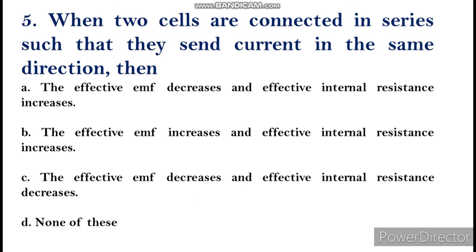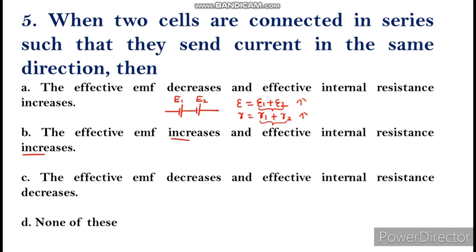The fifth question: when two cells are connected in series such that they send current in the same direction, the effective EMF is E1 plus E2 and the effective internal resistance is R1 plus R2. The EMFs are added, so effective EMF increases, and the internal resistances are added, so effective internal resistance also increases. The answer is option B.